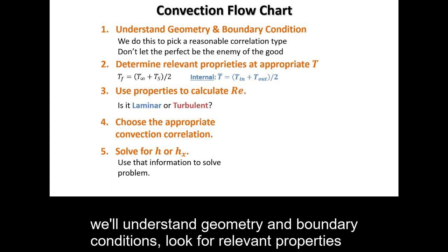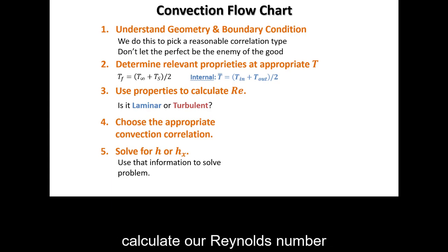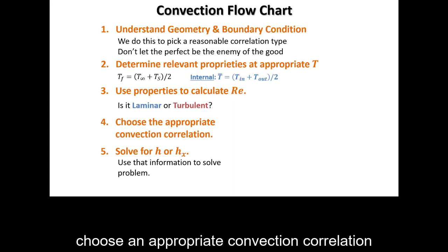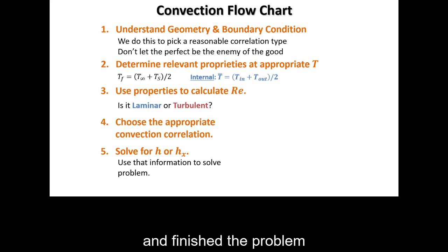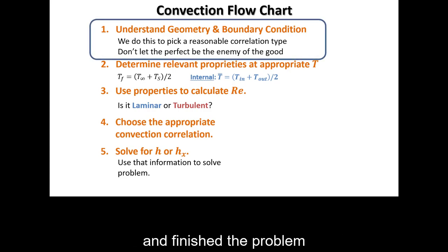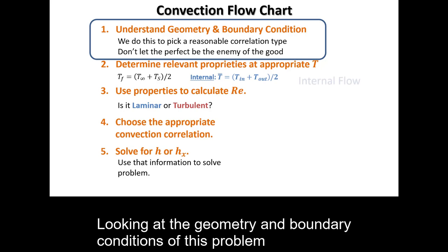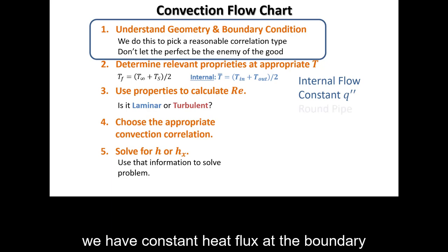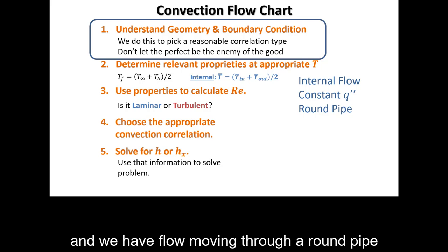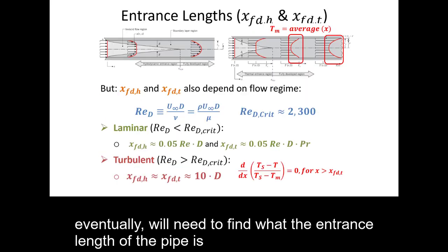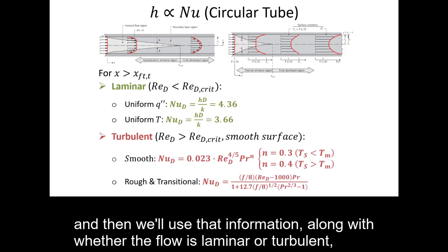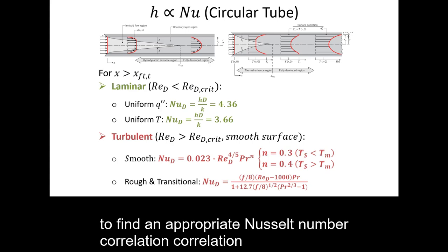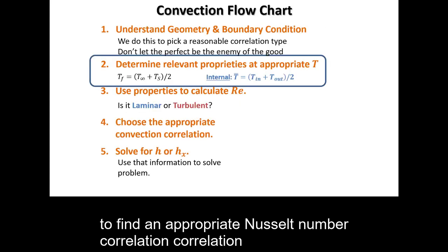Using the internal convection flowchart, we'll understand the geometry and boundary conditions, look for relevant properties, calculate the Reynolds number, choose an appropriate convection correlation, solve for the heat transfer coefficient, and finish the problem. For this problem: internal flow, constant heat flux at the boundary, flow through a round pipe. We'll also need to find the entrance length and determine whether the flow is laminar or turbulent to select the appropriate Nusselt number correlation.